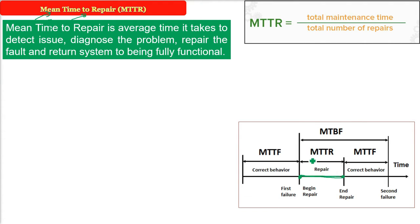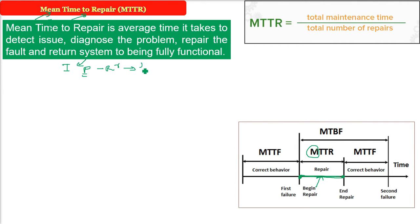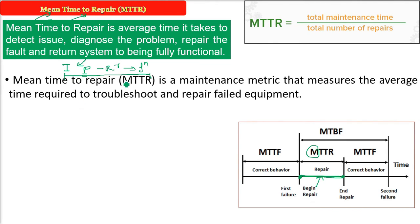Mean here means we take the average of various values — not one value, but different values — add them and find the MTTR. MTTR is the average time it takes to detect the issue, diagnose the problem, repair the fault or bug, and then the system returns to its functionality. MTTR is a maintenance metric.